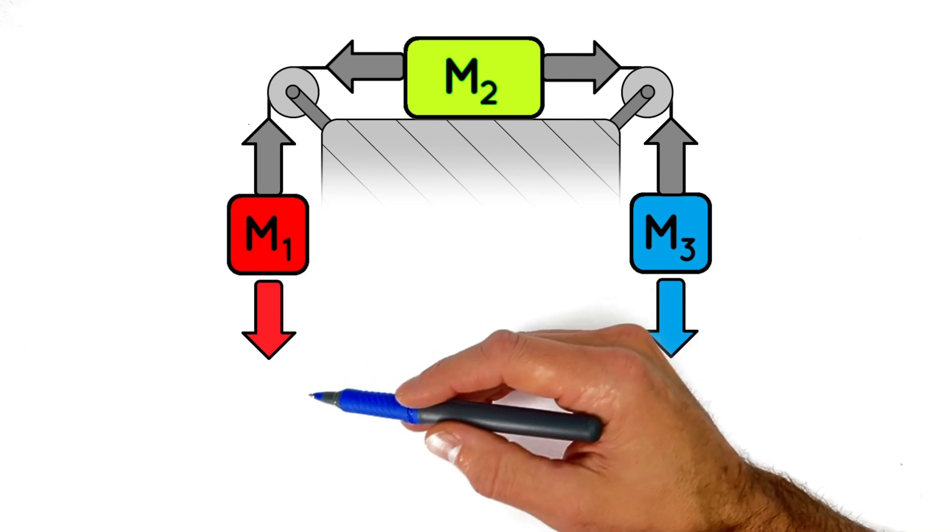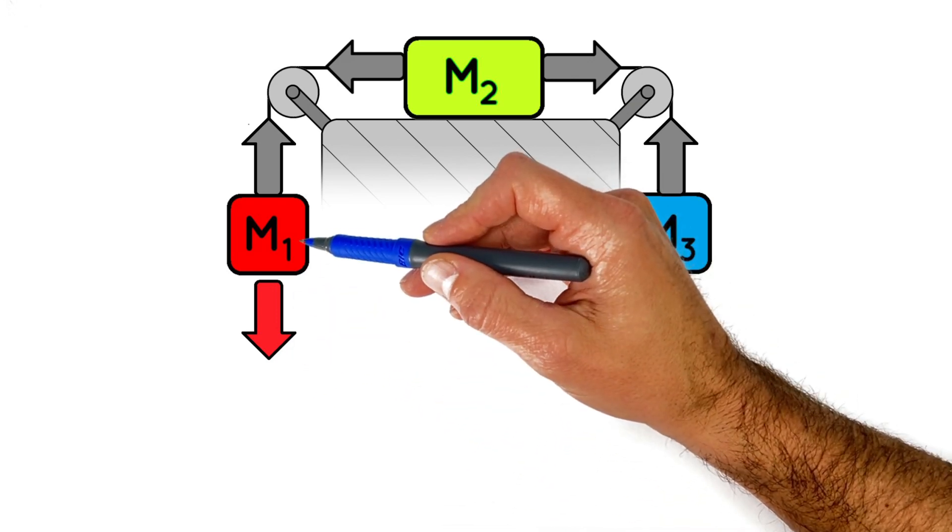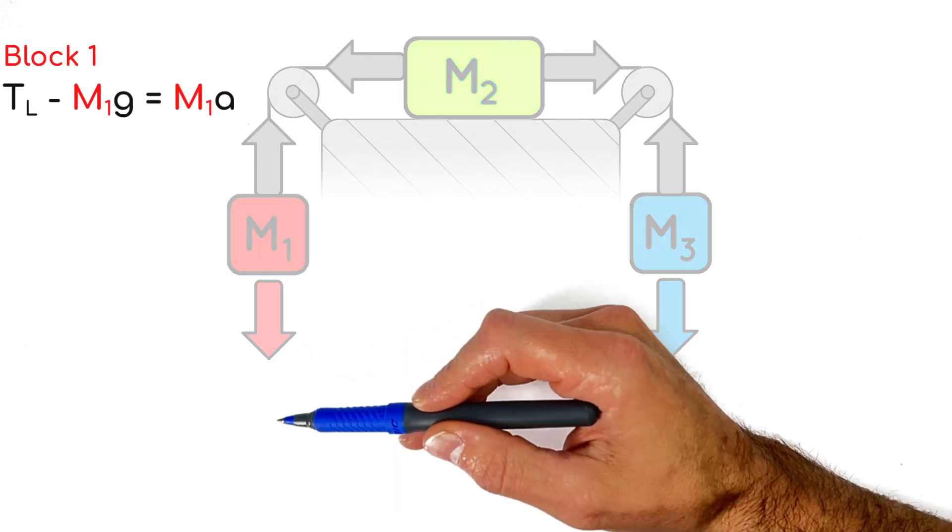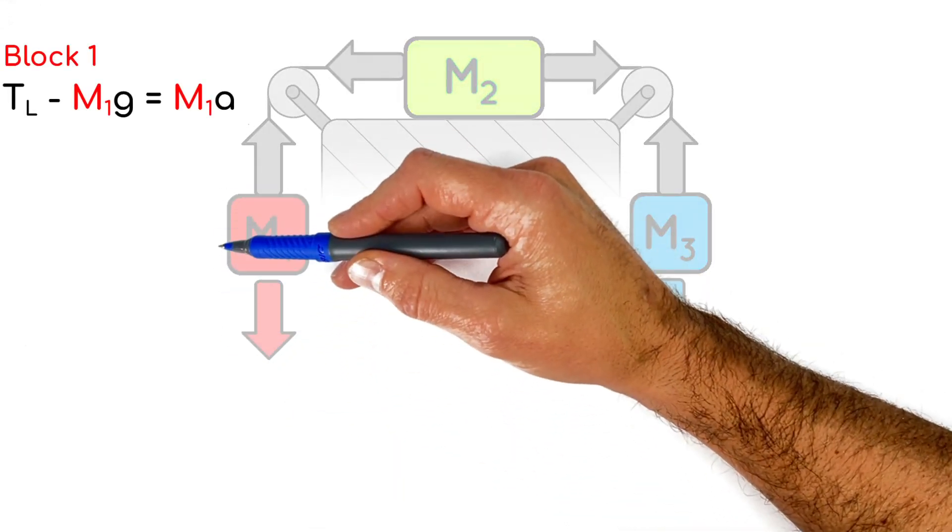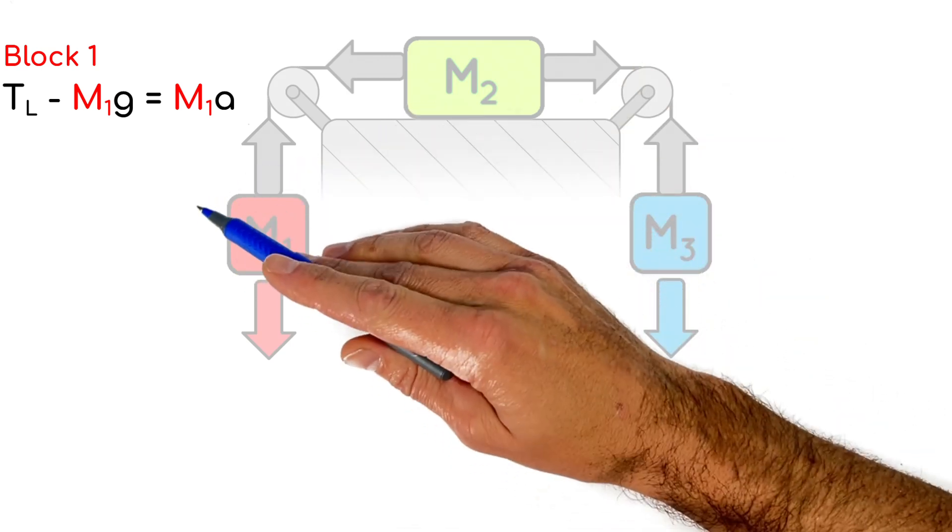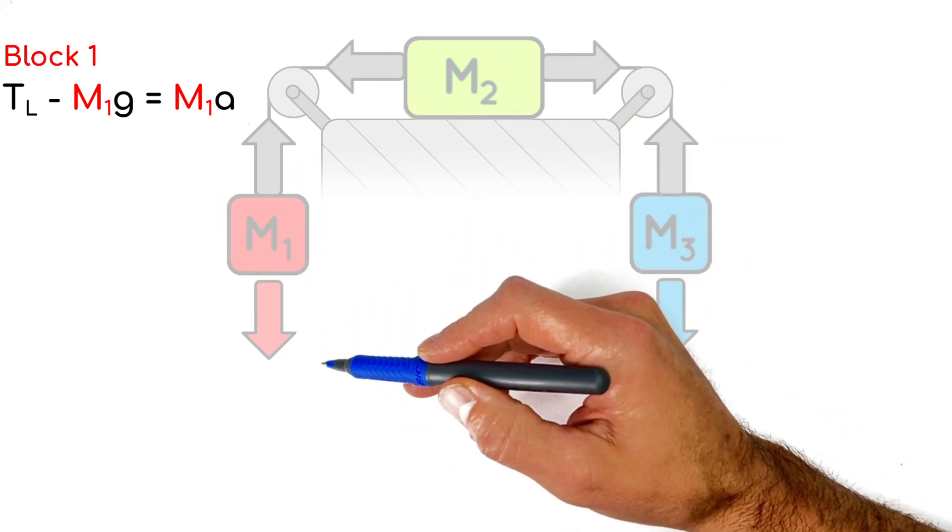Applying Newton's second law first to this block over here, there's this tension in the left string acting upward on the block, and there's this force by gravity acting downward on it. Now, if I say upward here is positive, then we're going to have TL minus M1G equals the net force acting on this block. That's M1A.